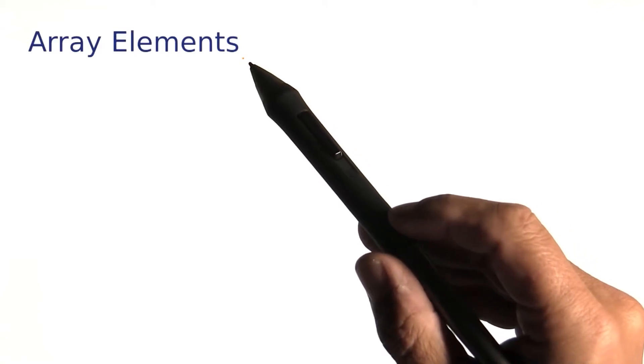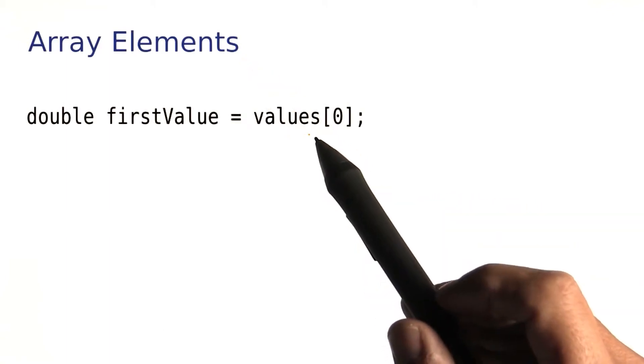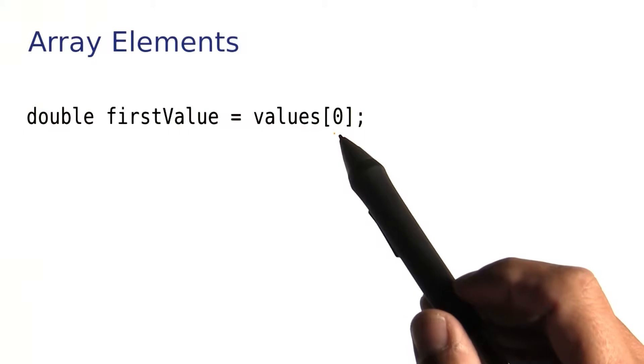Let's see how we can access the individual array elements. With arrays, you don't call a method to get at an element.